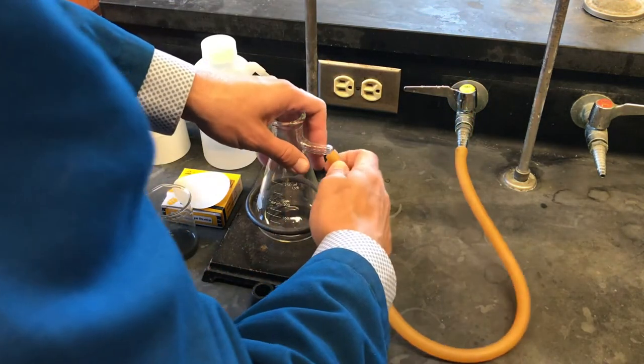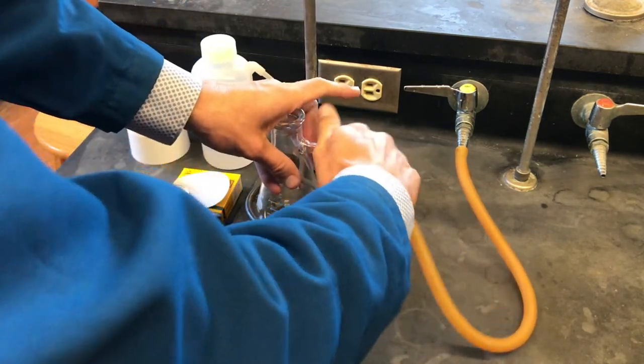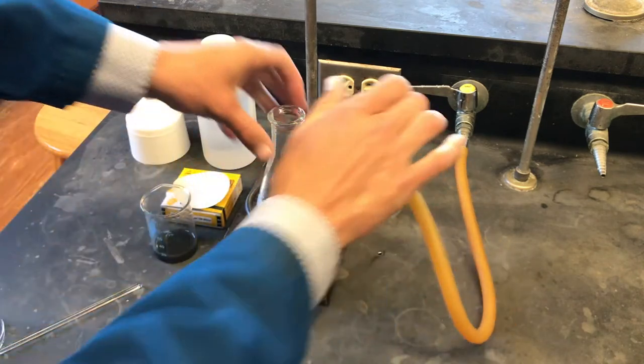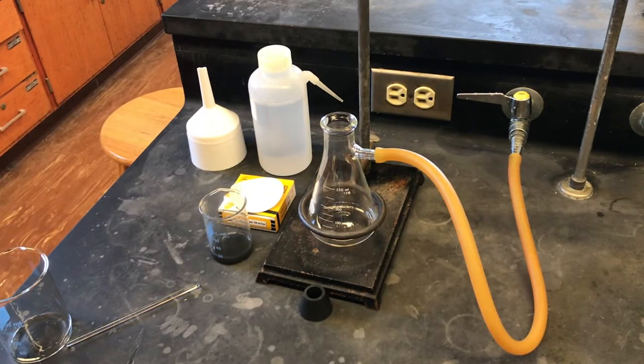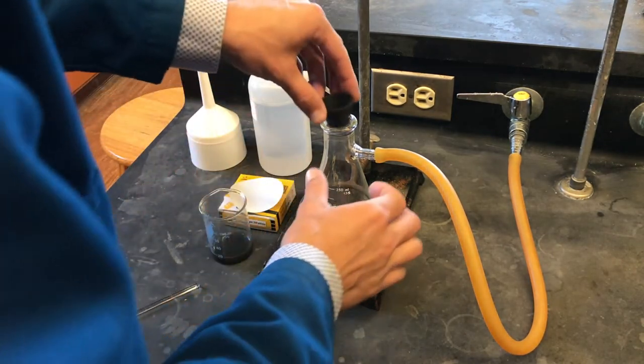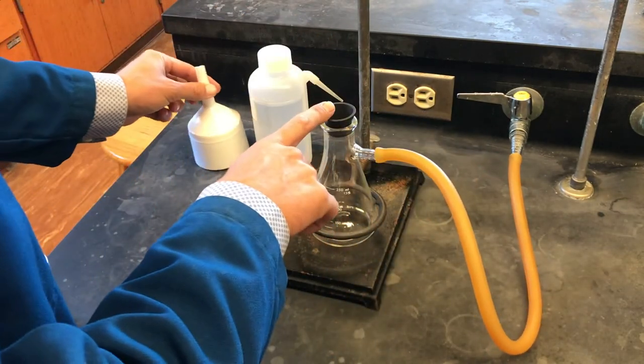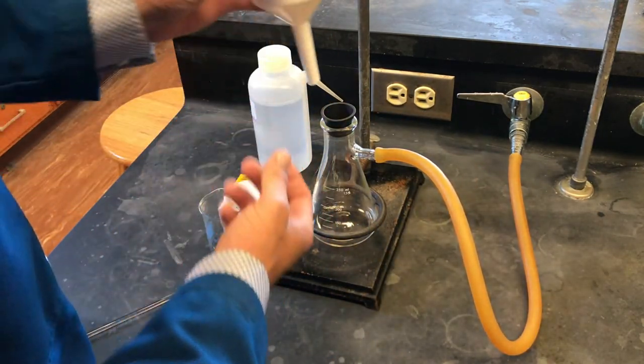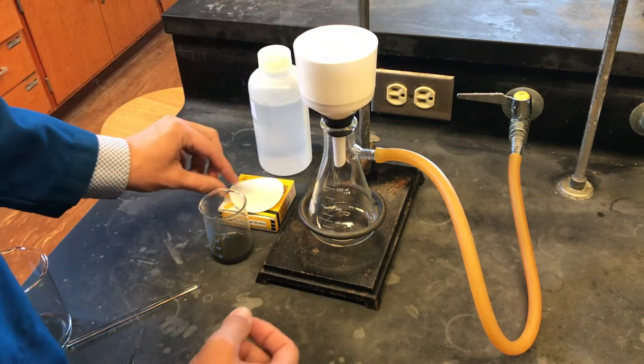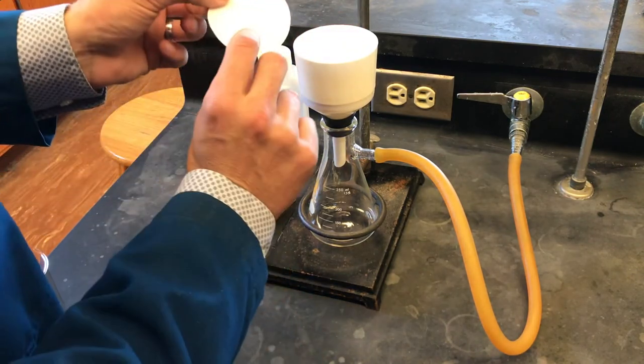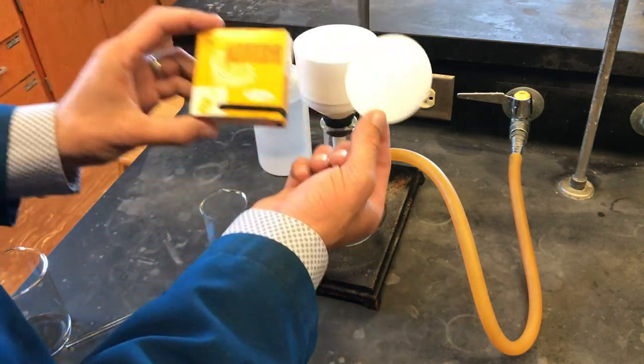A filter flask will be secured in a ringstand to eliminate risk of toppling during filtration. We'll then attach a vacuum hose from the house vacuum to our flask. The vacuum adapter goes next, which is a synthetic rubber gasket which ensures a good vacuum during filtration. On that goes the Buchner funnel, and in the funnel goes a piece of filter paper.